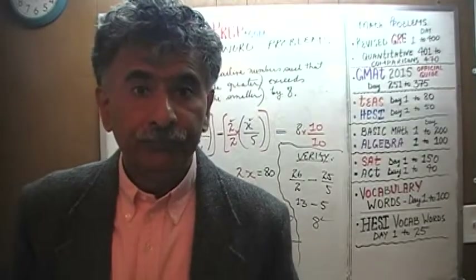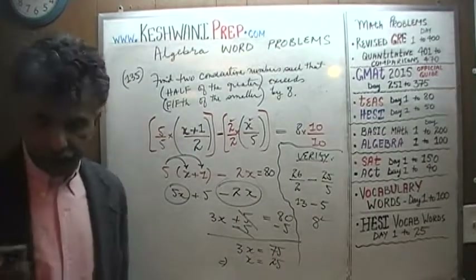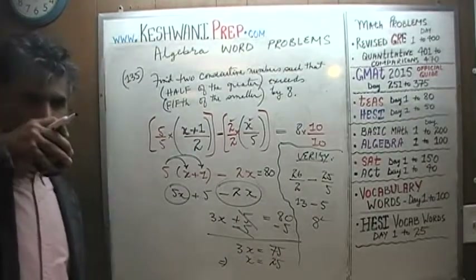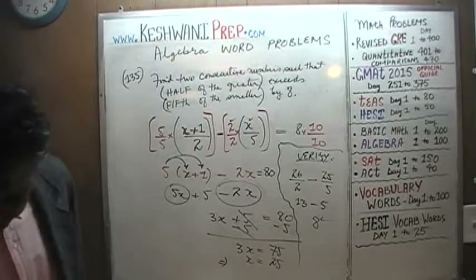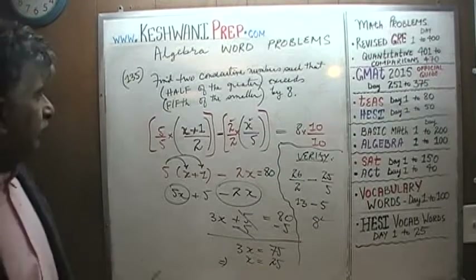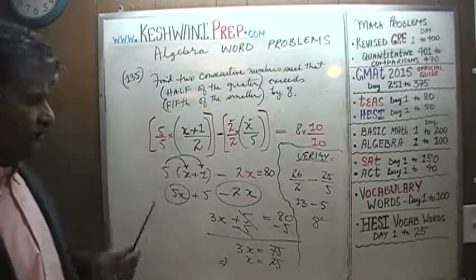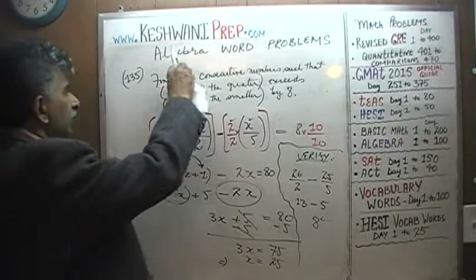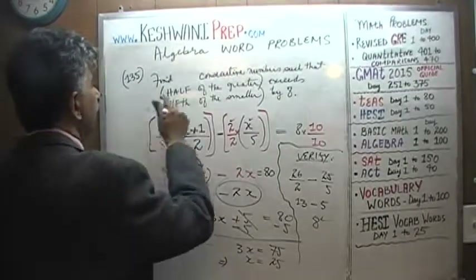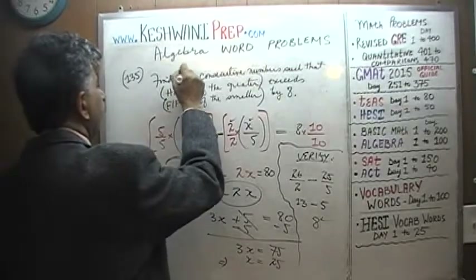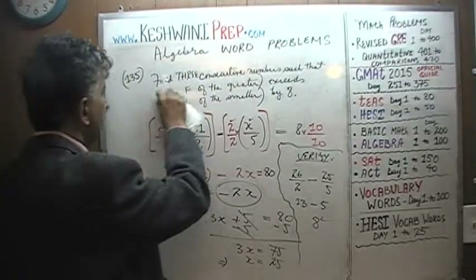You want to do one more? Let's do one more — one hundred and thirty-six. Problem 136 is very similar to what we just did, except we'll have three consecutive numbers.